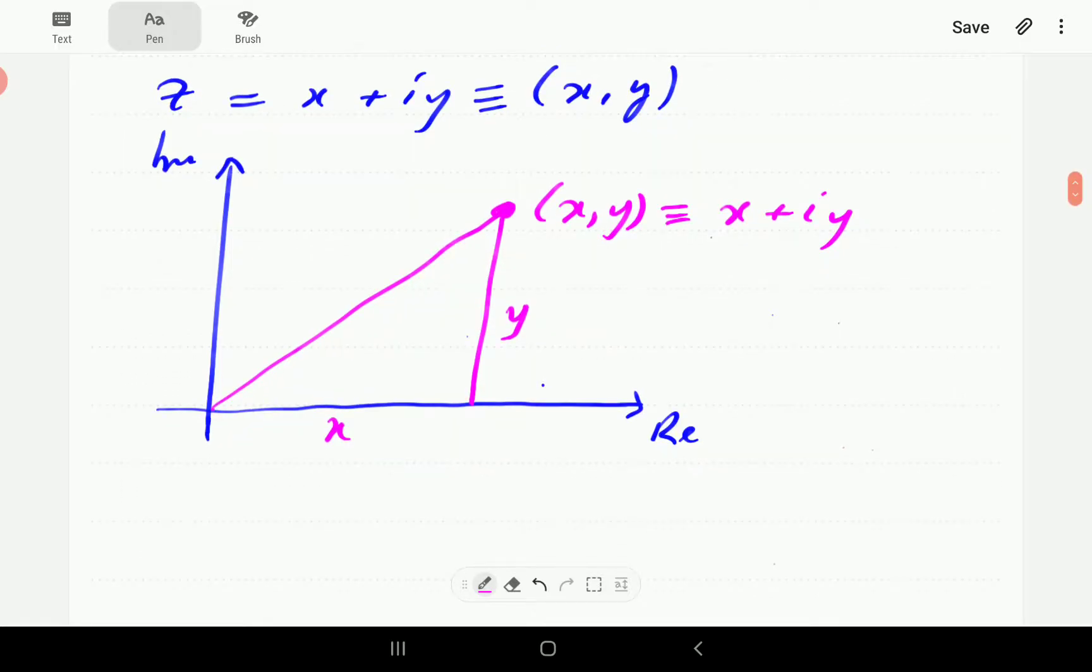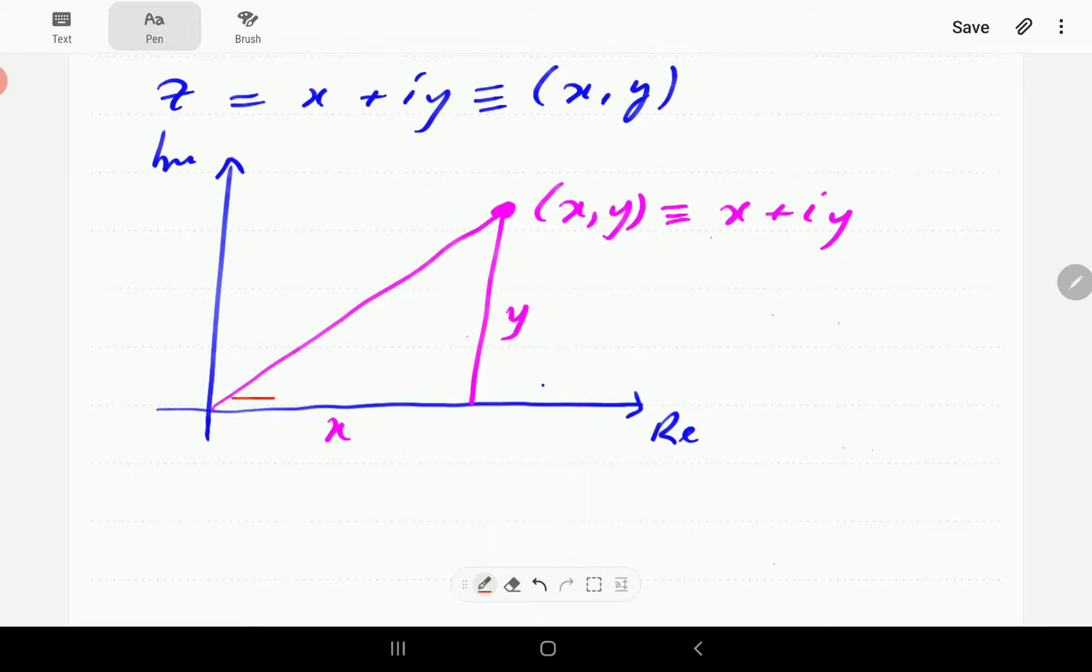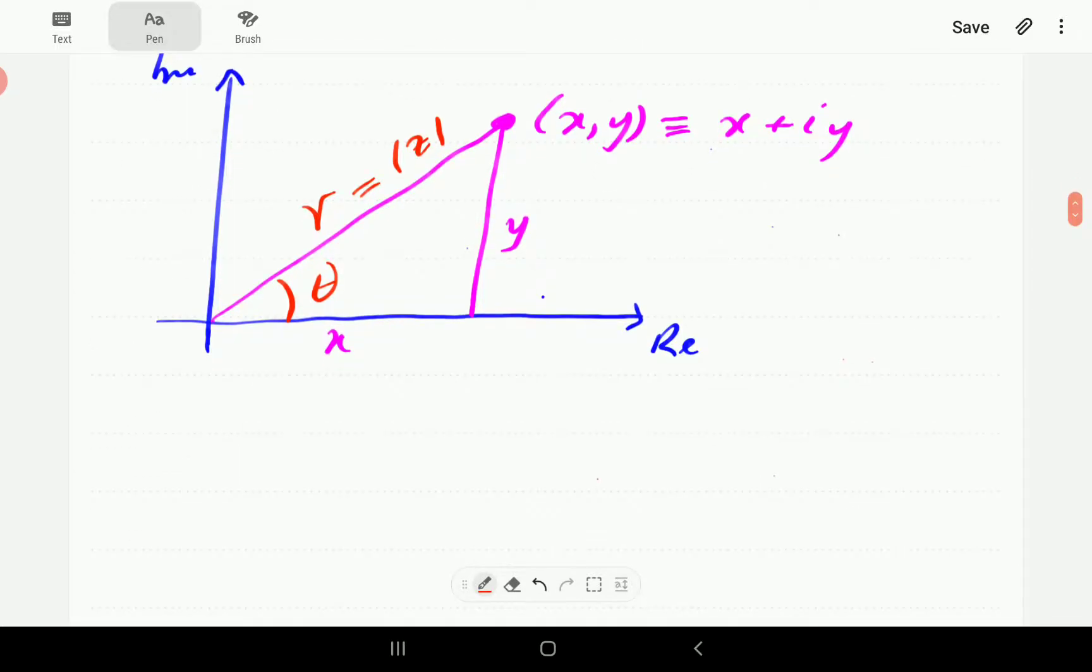Also we have established in the video on the modulus and the argument of the complex number z. So there we have established that the undirected distance from the origin to the point (x,y) is called the modulus of z denoted r or mod z. We've also established that this angle here is denoted theta and that one is the argument of z.